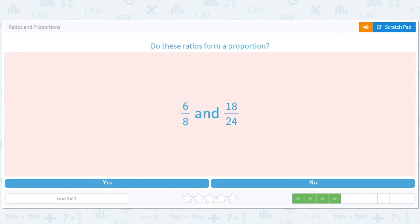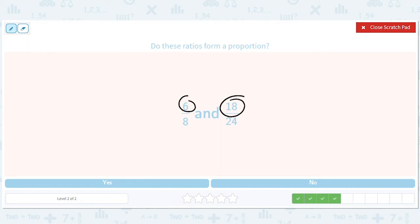How about here? Here, we've got 18 divided by six is equal to three. We have 24 divided by eight is equal to three. So these are both three. And the answer is yes.